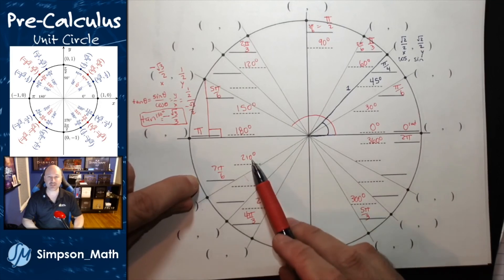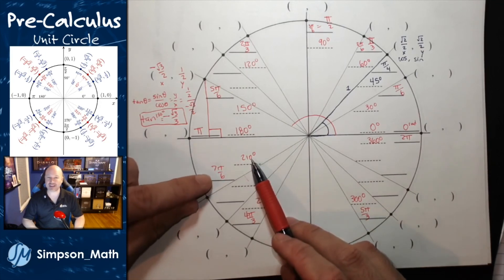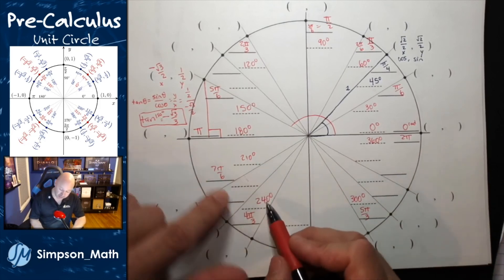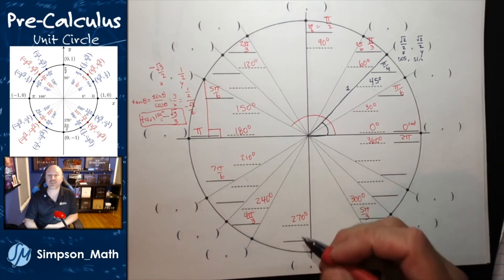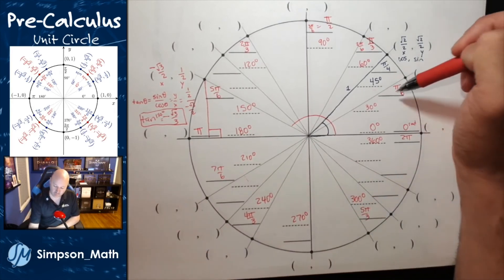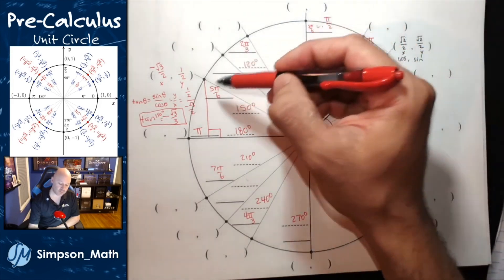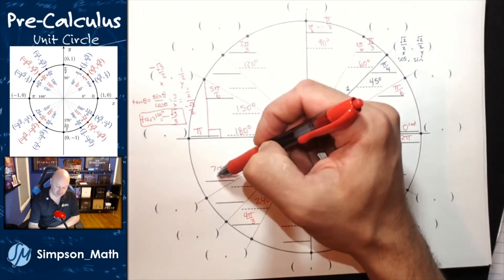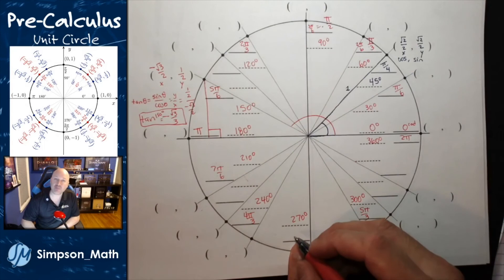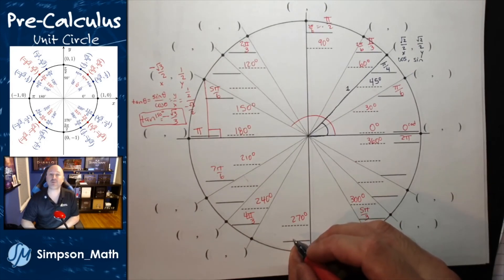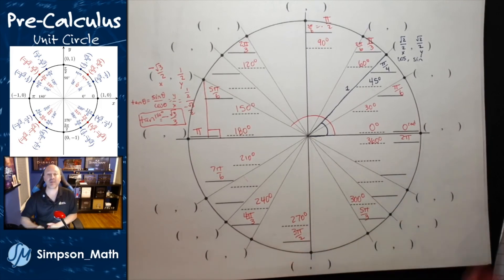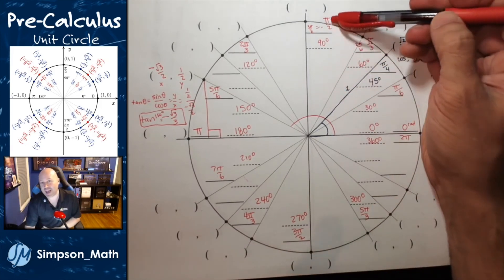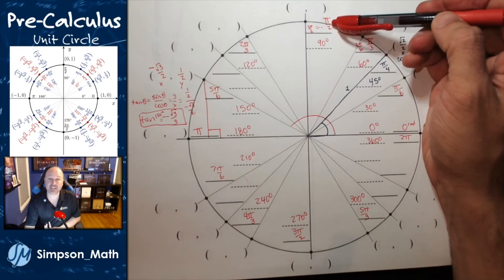I didn't have to bust out a calculator and reduce. I just counted by pi sixths: 1, 2, 3, 4, 5, 6, 7, 8, 9 pi sixths. Those 9 and 6 are both divisible by 3, so we get 3 pi halves — and that should make sense if I count by pi halves. Every pi halves is 90 degrees: 1 pi half, 2 pi halves, 3 pi halves, 4 pi halves.